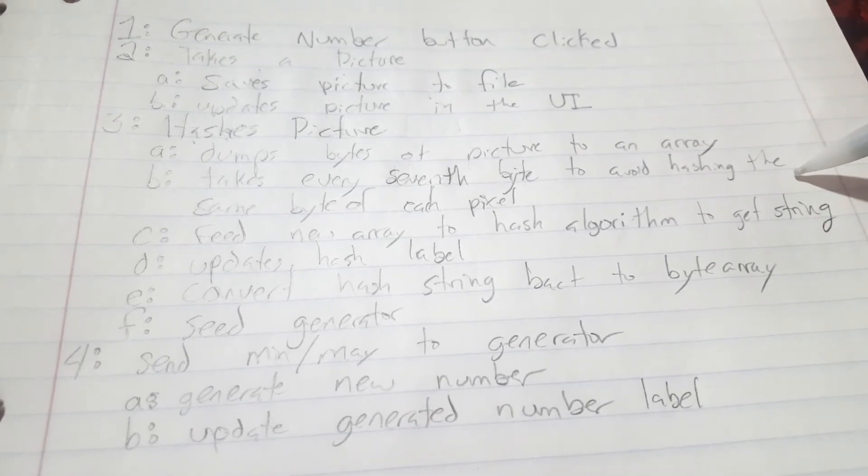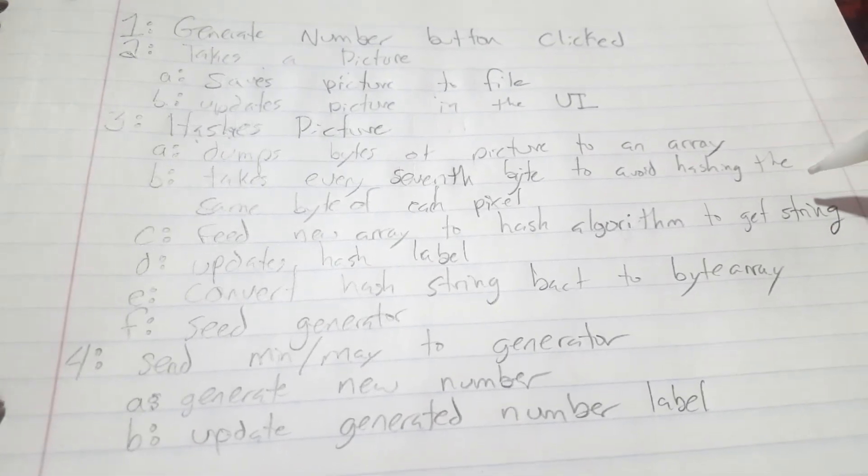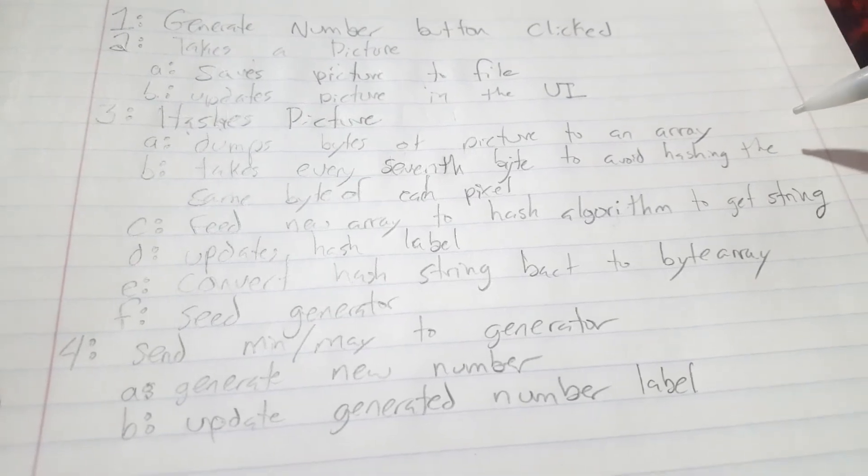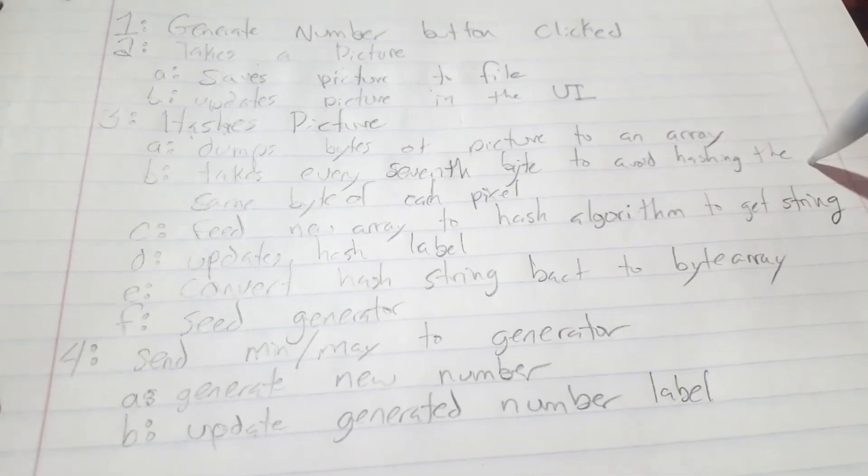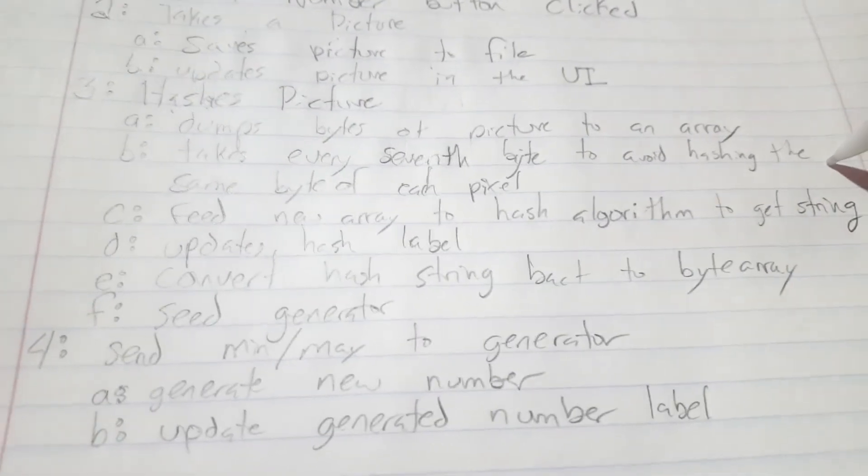Although I think they're off wrong because there's only 3 bytes per pixel. Correct me if I'm wrong, but should be hashing every 3rd byte. Oh well.